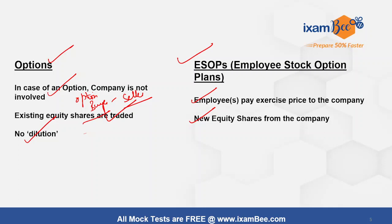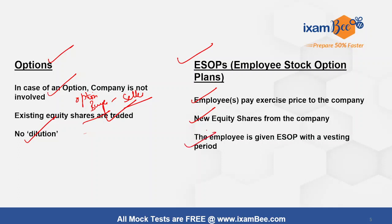These key employees are beneficial for a company because they work towards the betterment and growth of the company, increasing the share price in the future. They are given additional wealth benefits so they can exercise this option and get new equity shares by paying an exercise price that is lesser than the market price. ESOPs come with a vesting period, after which the option can be exercised, issuing new equity shares and causing dilution of stake.